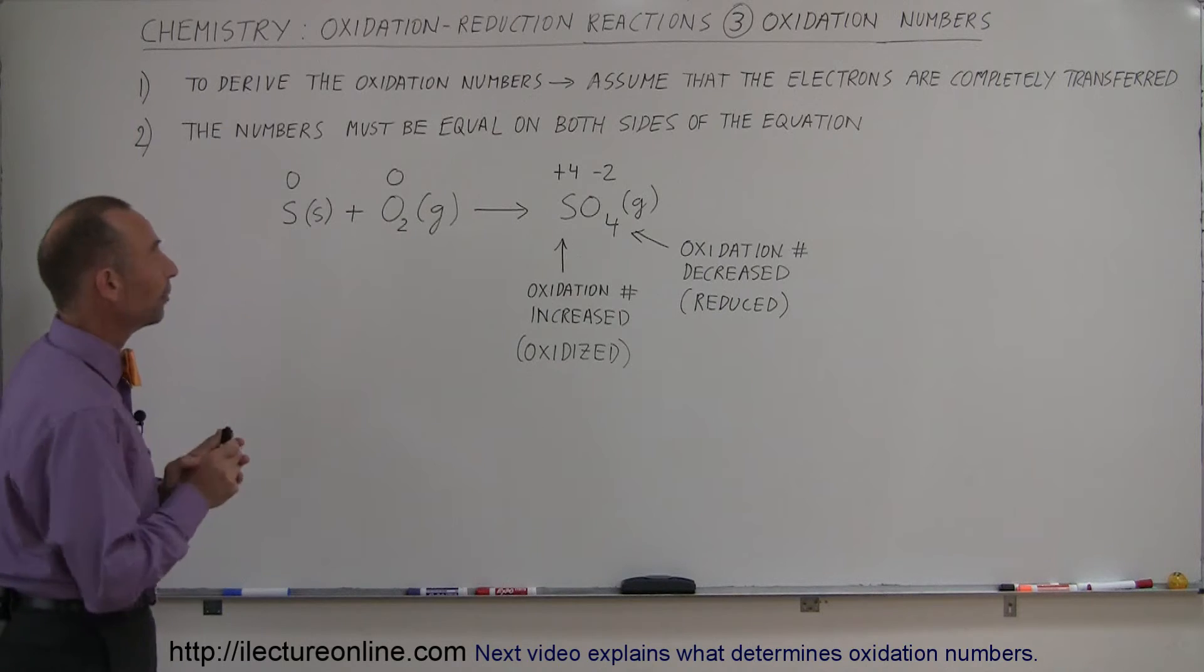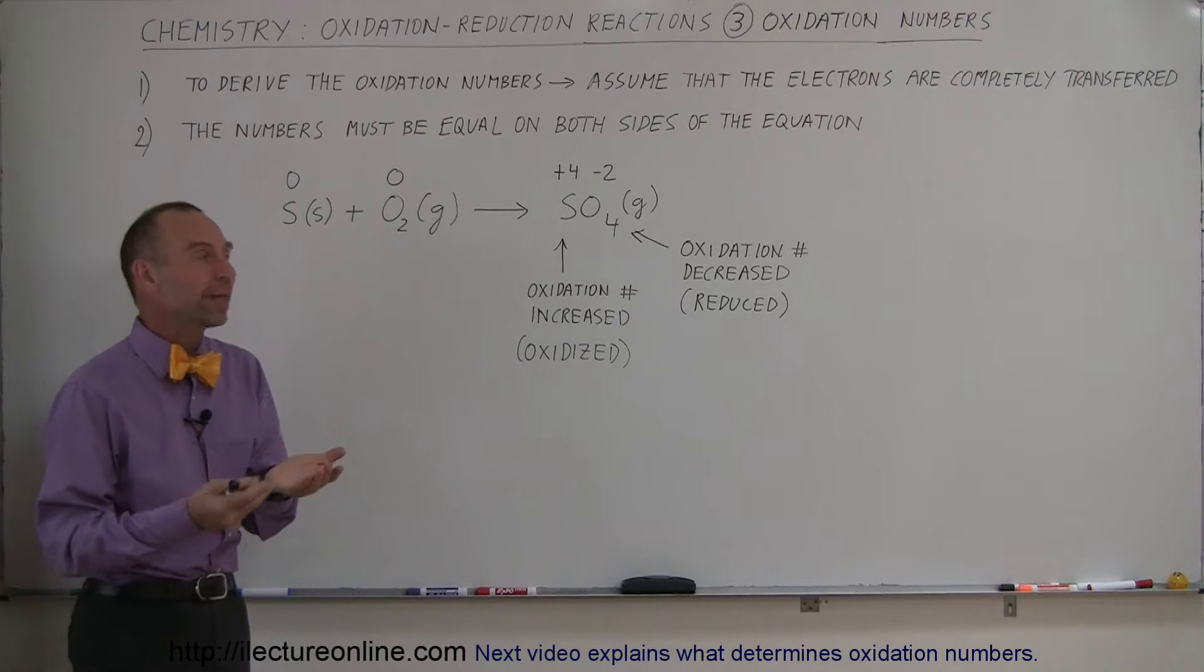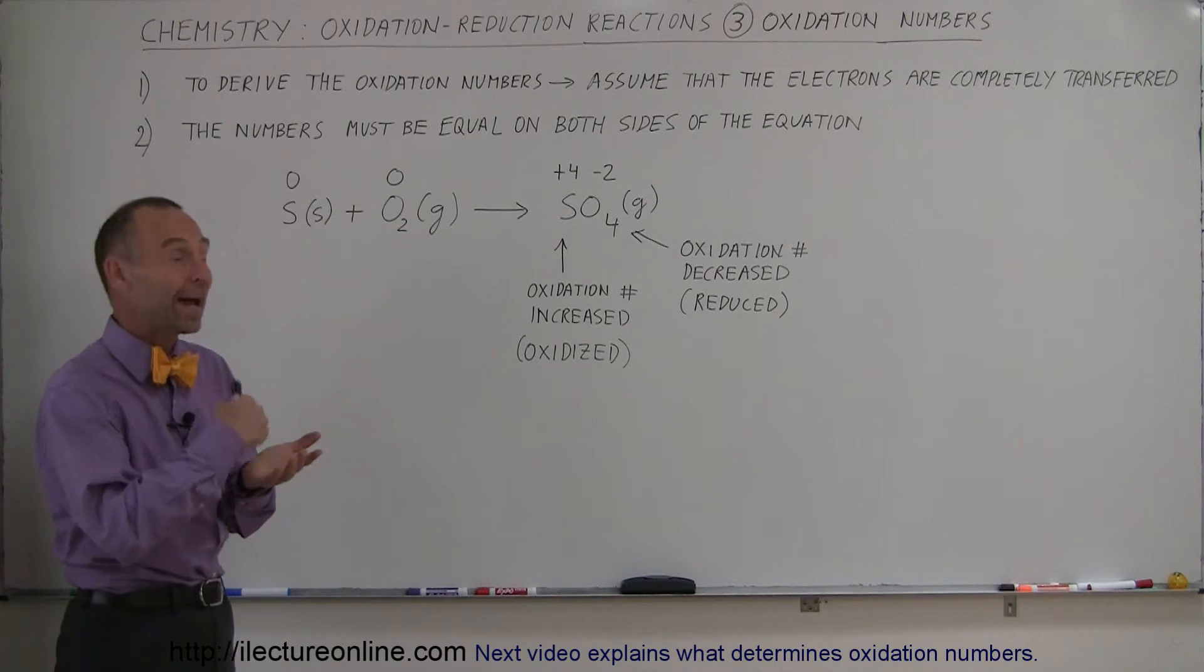Two things we need to remember. First, to derive the oxidation numbers, we assume that electrons are completely transferred from one atom to another, from one ion to another.